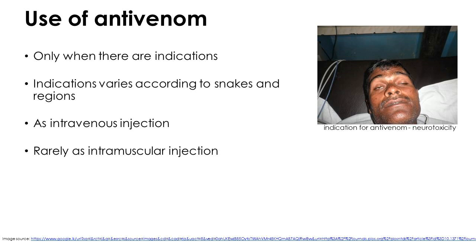Antivenom is produced based on animal serum, and therefore it can cause mild to severe allergic reactions, including anaphylaxis, when administered. Hence it is a must to administer antivenom only when it is crucial. The recommended route for administration is intravenous, as it facilitates injection of a massive dose to target sites within a short period of time. The benefit of intramuscular administration is yet to be proven, but it is used on some rare occasions.